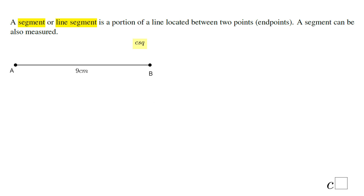For example, you have here segment AB and we have a length of 9 centimeters. This is the notation for a segment, and whenever you talk about the length of a segment — how long it is — you don't need that sign. For example, here the segment AB is 9 centimeters.